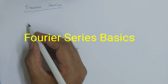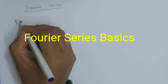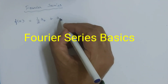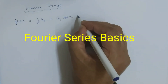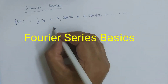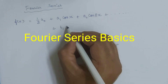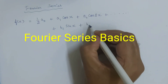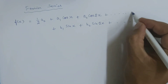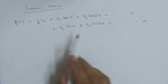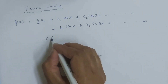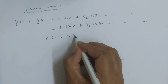The Fourier series is denoted by f(x), which is equal to half of a_naught plus a1·cos(x) plus a2·cos(2x) plus so on, plus b1·sin(x) plus b2·sin(2x) plus so on to infinity. This is a special expression given by Fourier for the interval α < x < α + 2π.